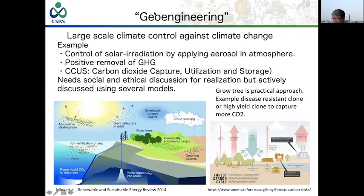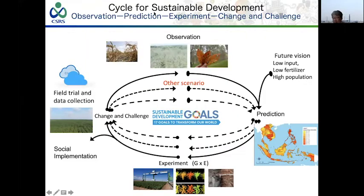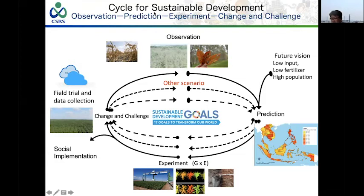CCUS — carbon capture, utilization, and storage — is currently being explored using thermal power plants to pump carbon dioxide underground. Among approaches, growing trees is a practical method, such as growing disease-resistant or high-yield crops to capture more carbon dioxide. It is estimated that about half of atmospheric CO₂ is absorbed by forests. This includes activities for better sustainable development scenarios: first observing current conditions, then predicting future states — not only global conditions but also future agriculture practices such as low fertilizer input. We can try several experiments combining genotype and environment; selected crops are then challenged in the field. This G×E (genotype-by-environment) approach is proposed by several researchers and may also be applied to natural rubber (Hevea). For genotype, we can choose several clones, cultivars, and Hevea species; for environment, we can choose different temperature conditions. 274 Hevea accessions have been selected, analyzed by pan-genome sequencing, and examined with various experiments to select suitable accessions.